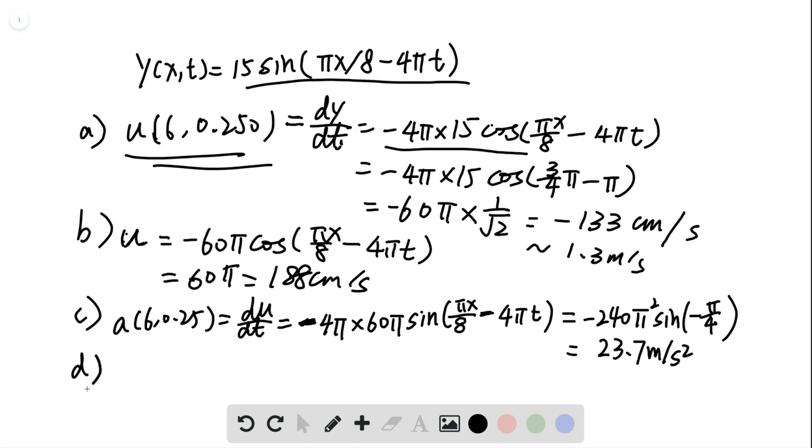Finally, it's maximum acceleration. So a max is, again, when cosine, here we have a sine. When negative sine equals 1. So it's just equal to 240 pi squared. And 240 pi squared is roughly 16.7 meter per second squared. Sorry, I'm looking at the wrong line over here. This is actually 16.7 meter per second squared.